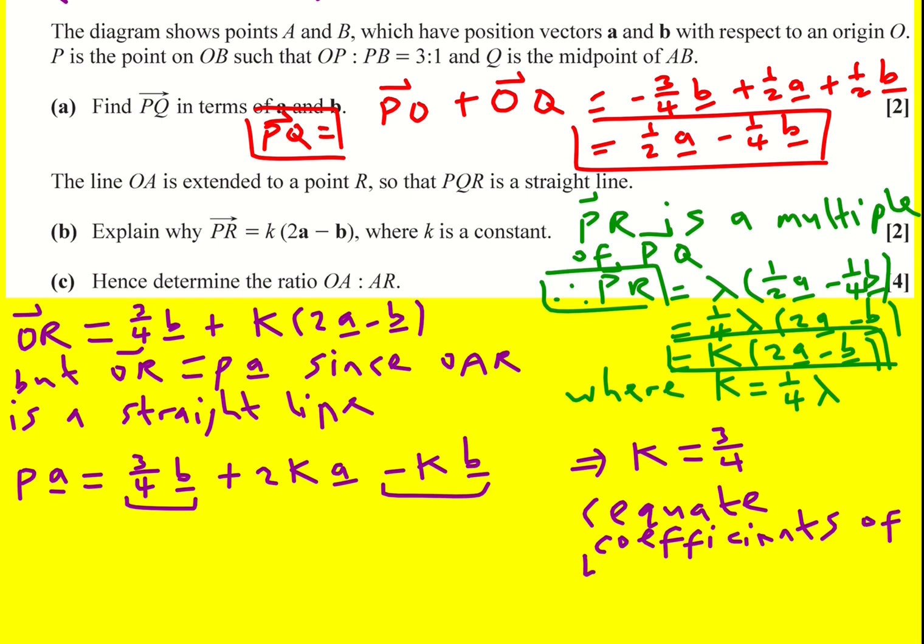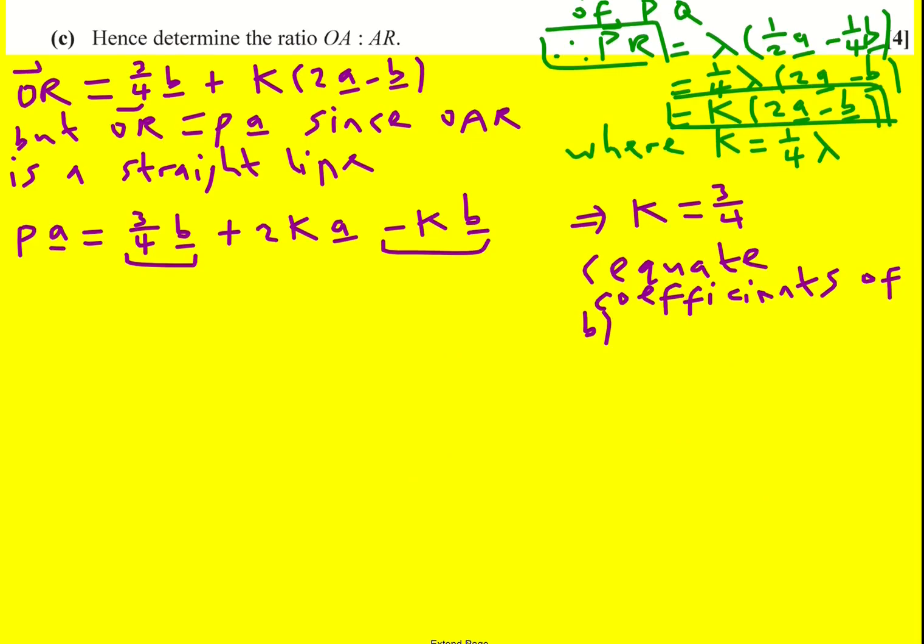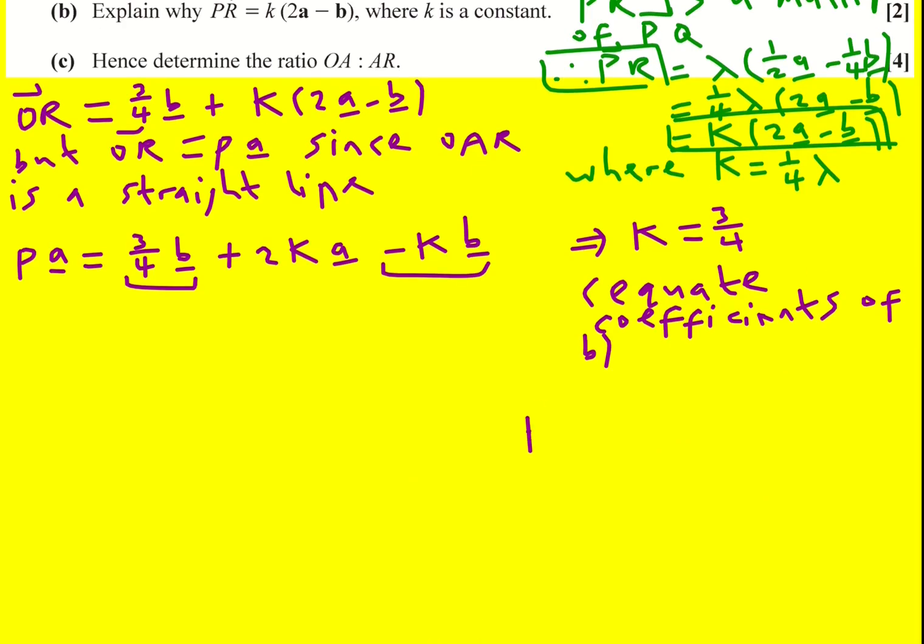I'm actually using a result here without specifying it, that if μa plus λb equals αa plus γb and a is not parallel to b, then it must be that μ equals α. This is very important on some questions, including this one.